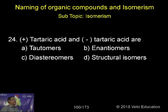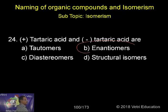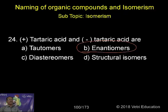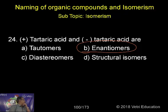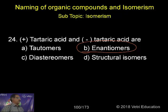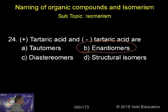Plus tartaric acid and minus tartaric acid are called enantiomers. What are enantiomers? Optically active compounds having the same molecular formula but one will be the mirror image of the other are called enantiomers.